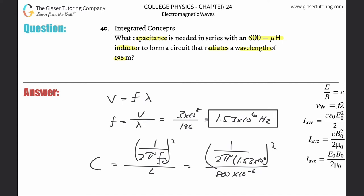So this is 1 divided by parentheses 2 pi times 1 point, I'll just plug in that exact answer from before, close the parentheses, square that result, and then divide that by 800 times 10 to the minus 6. And it's 1.35. So the capacitance is equal to 1.35 times 10 to the negative 11th, and that's in terms of farads.